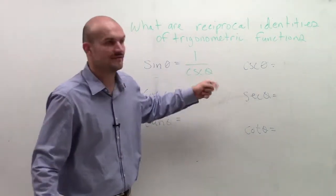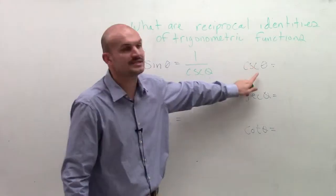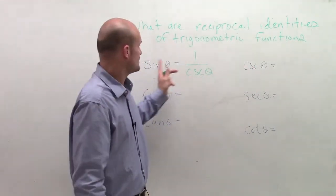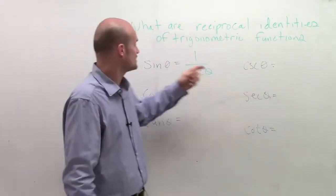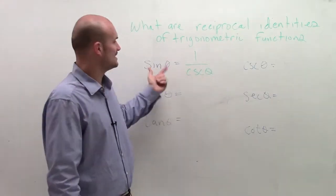Because remember, these are reciprocals of each other. 1 over cosecant is the reciprocal of cosecant. And since these are two reciprocal properties, the reciprocal of one is equal to the other.